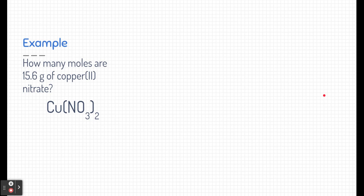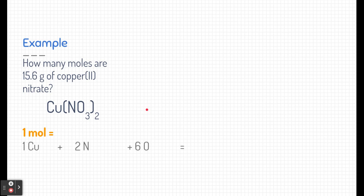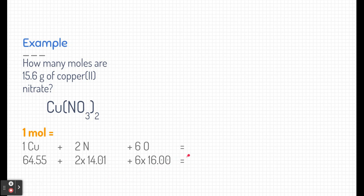So how do we use this? Let's apply it to an example problem: How many moles are in 15.6 grams of copper nitrate? To figure this out, we need to know the molar mass of copper(II) nitrate. There is one copper, two nitrogens, and six oxygens in this formula. Adding up all the masses from the periodic table and multiplying by how many of each element there are, we determine that one mole of copper(II) nitrate equals 188.57 grams.